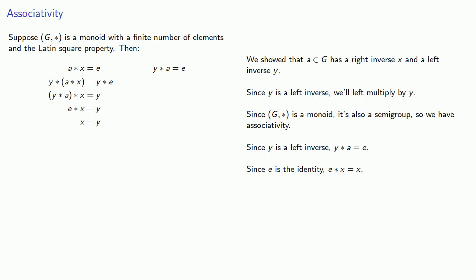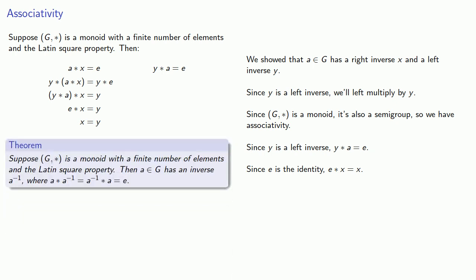And so this proves the following theorem: Suppose G-star is a monoid with a finite number of elements and the Latin square property. Then any element of G has an inverse A-inverse. No left, no right, but this inverse can be used on either side to get the identity.